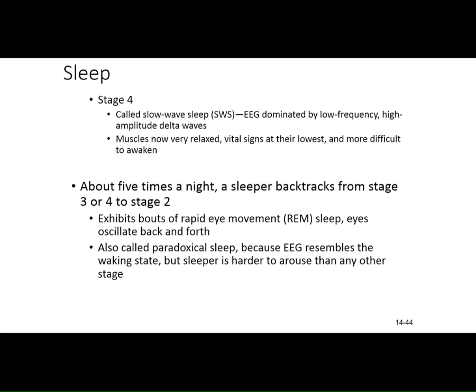About four or five times a night, a sleeper will backtrack — rather than staying in stage four, they go back to stage two. This is when you have rapid eye movement — REM sleep. You can actually see the eyes moving under closed lids. This is also called paradoxical sleep because even though the EEG shows stage two activity, suggesting lighter sleep, it is actually more difficult to arouse somebody during this period. Paradoxically, they look more awake on EEG but are harder to wake up.